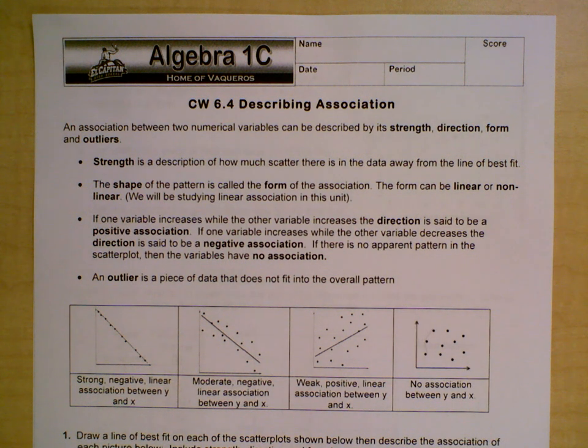All right, hello class. We actually have a really easy, it should be a pretty quick lesson today. So classwork 6.4, describing association. Association between two numerical variables can be described by its strength, direction, form, and outliers.